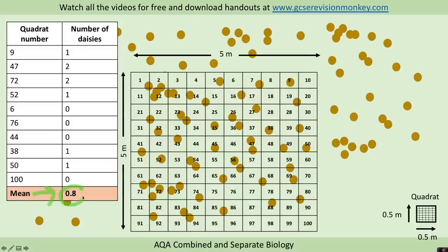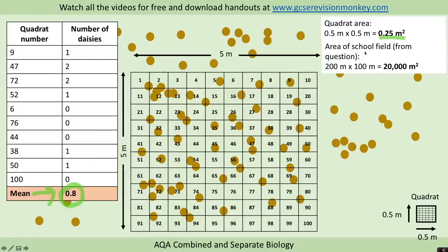Because we're going to use this number in a calculation, I'm just going to leave it as a decimal rather than rounding it. We need to use this to estimate the number of daisies in the whole school field. We need the area of our quadrat, so we do 0.5 times 0.5, which is 0.25 meters squared. The area of the school field from the question was 200 meters by 100 meters, so 20,000 meters squared.